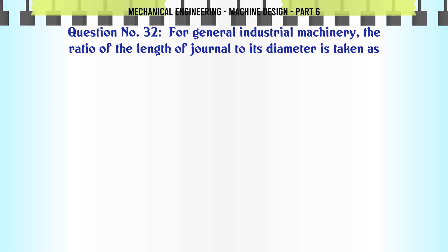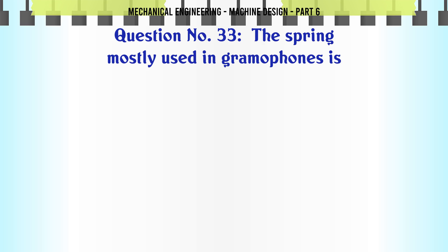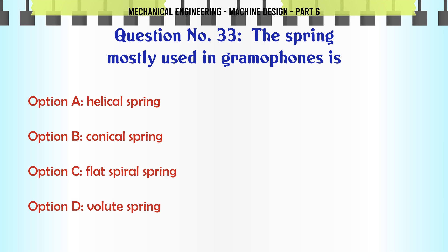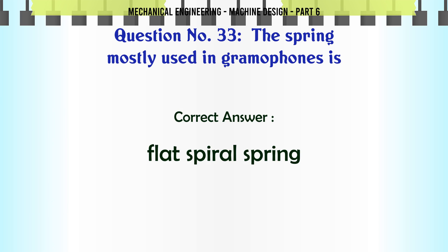For general industrial machinery the ratio of the length of journal to its diameter is taken as: A) 0.5 to 1, B) 1 to 2, C) 3 to 5, D) 5 to 10. The correct answer is 1 to 2.